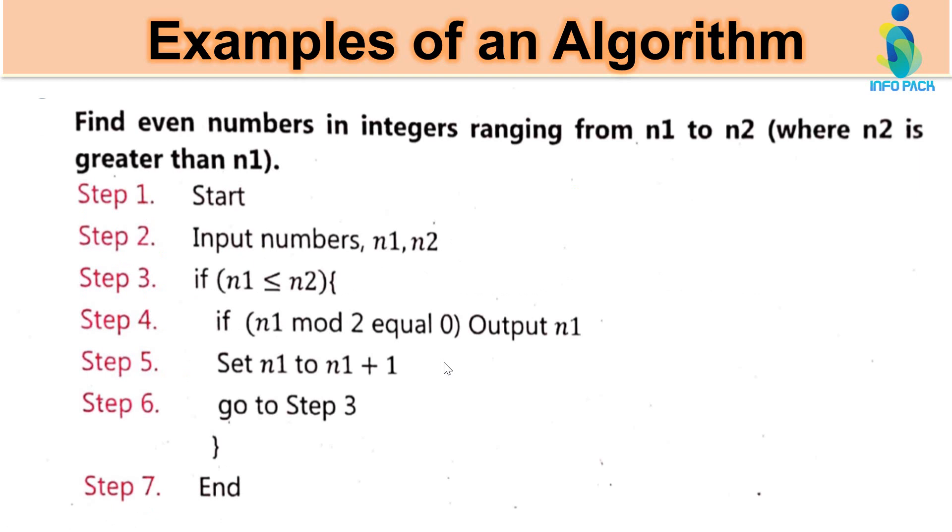Next example is find even numbers integers ranging from n1 to n2 where n2 is greater than n1. Why n2 should be greater than n1? Because n1 may starting value hooghi, n2 may ending value hooghi. In step 3 now we have to check condition. n1 is less than n2 or not. For example n1 is equal to 4 and n2 is equal to 12. So now check the condition n1 is less than n2. 4 is less than 12, yes condition is true.